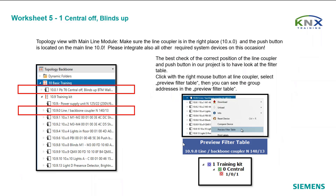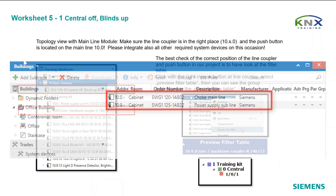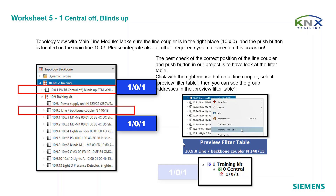Topology view with main line module: make sure the line coupler is in the right place, 10.x.0, and the push button is located on the main line, 10.0. Also integrate all other required system devices such as chokes and power supply units. The best check of the correct position of the line coupler and push button is to look at the filler table. Right-click on the line coupler and select 'Preview Filler Table' to see the group addresses. The filler table will show group addresses only if they have links to communication objects on either side of the line coupler.